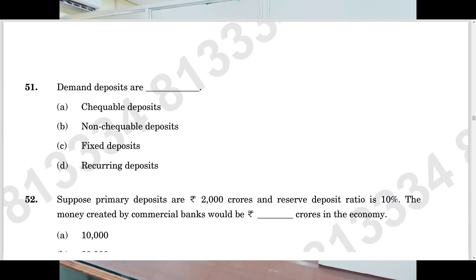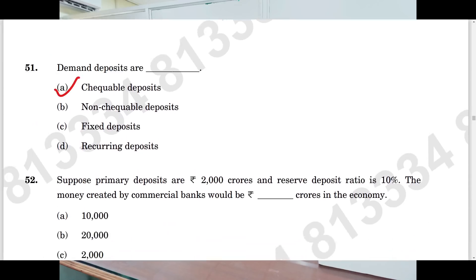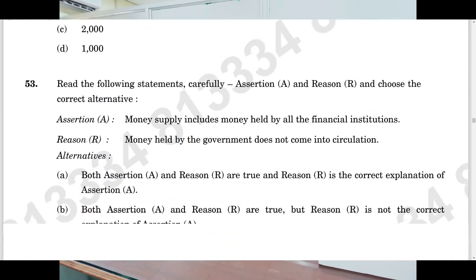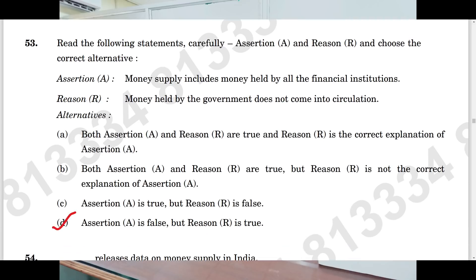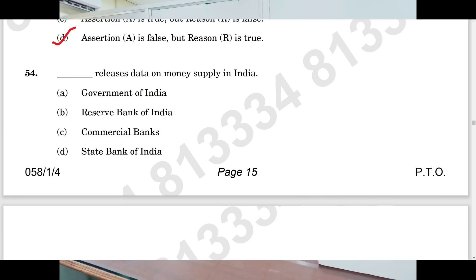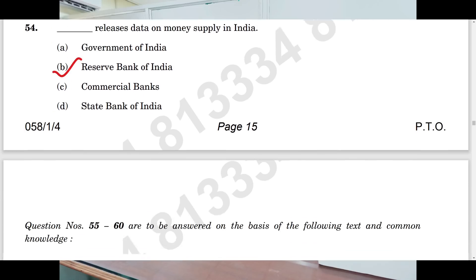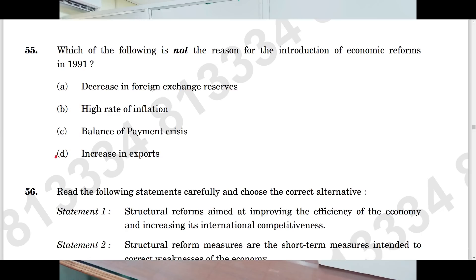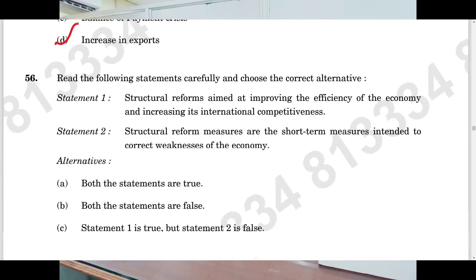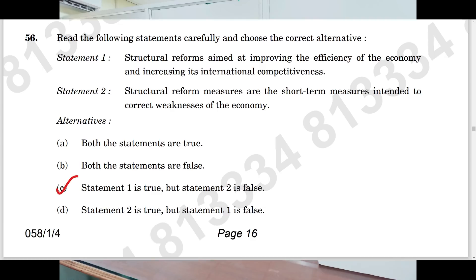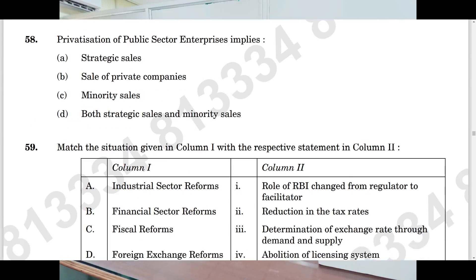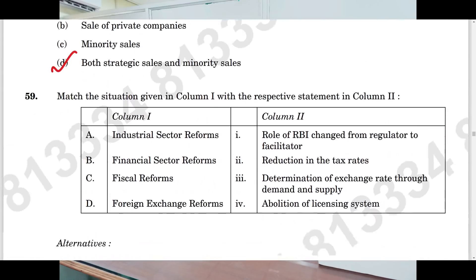Question number fifty-one: A. Question number fifty-two: B. Question number fifty-three: D. Question number fifty-four: B. Question number fifty-five: D. Question number fifty-six: C. Question number fifty-seven: A is the answer. Question number fifty-eight: D is the answer.